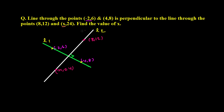If we find the slope of line L1 as m1, and the slope of L2 as m2, then what we have learned is: if two lines are perpendicular, the product of their slopes will always equal minus one. So m1 times m2 equals -1.